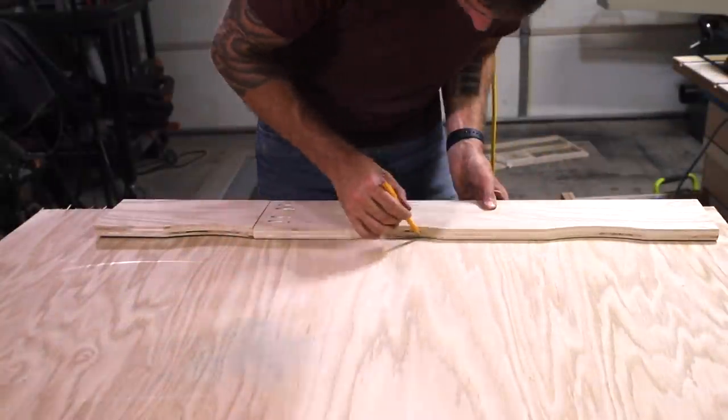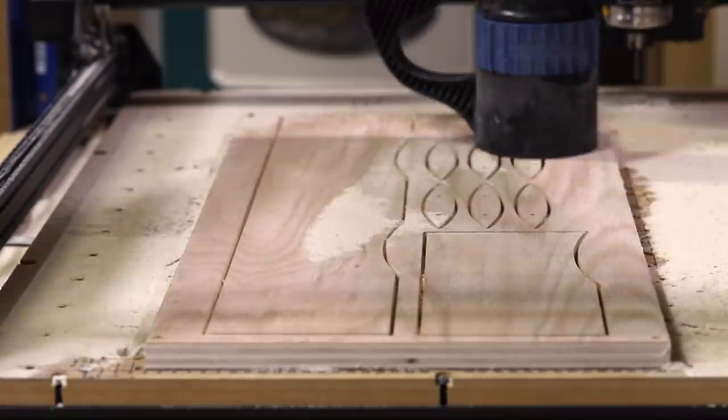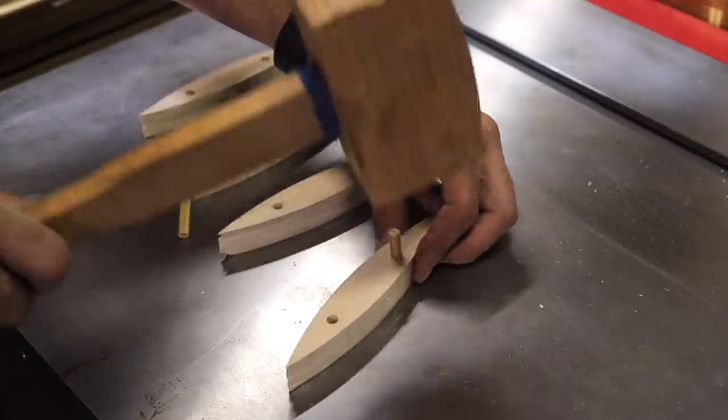I'm going to bend these strips around a form to create voids I can fill with epoxy and centipedes, so I made these templates on my CNC machine. This process is called bent lamination and it creates a really strong final piece.